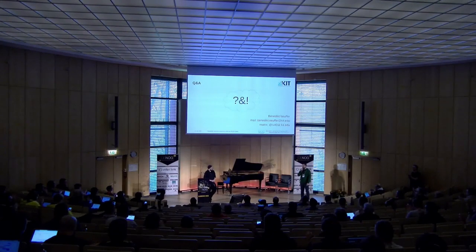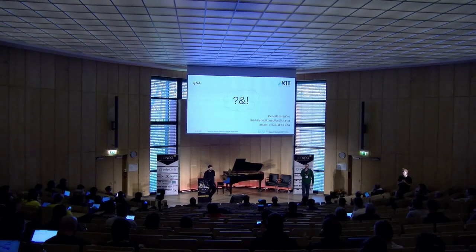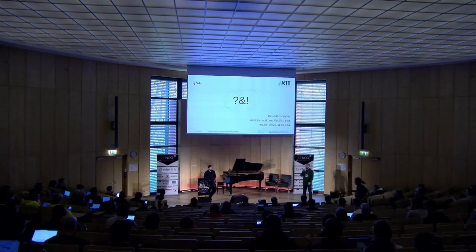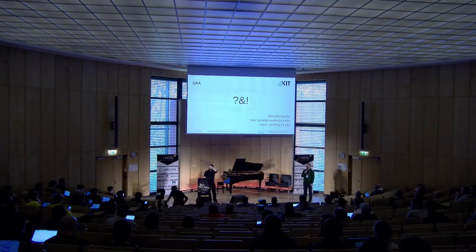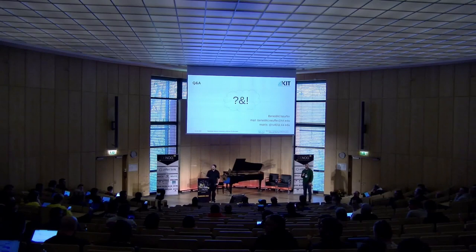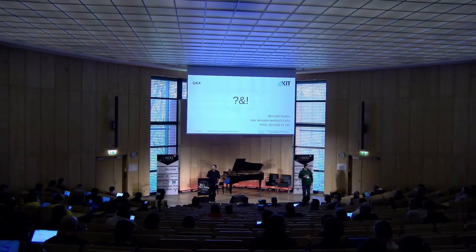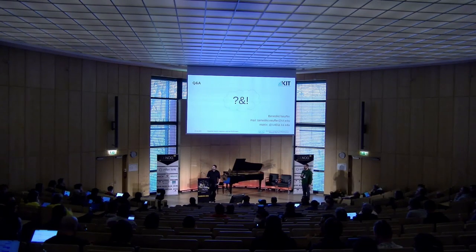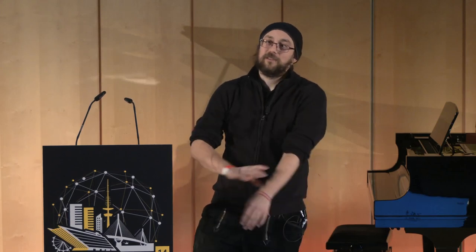Thank you, Benedict, very much for this talk. I think we have time for one question. Question from the audience: How do you do state synchronization between the firewalls? We are using Palo Alto and they are really good at state synchronization — so you put a layer 2 link between the firewalls. I don't know exactly how it works at that point, it's a proprietary solution. But if you want an open source solution, look into FreeBSD or OpenBSD — they can do it with PF-Sync very well.